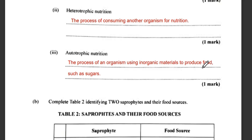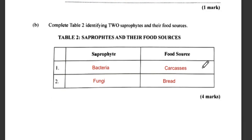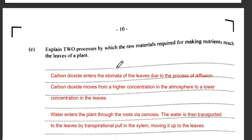From Table 2, identify two saprophytes and their food sources. The saprophytes are bacteria, whose food source is carcasses, and fungi, whose food source is bread. We receive four marks for that question — it's pretty straightforward.